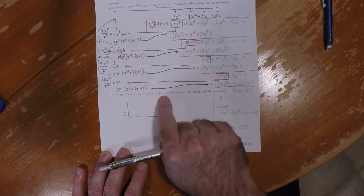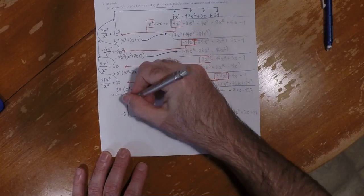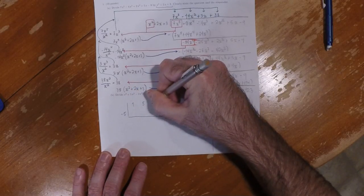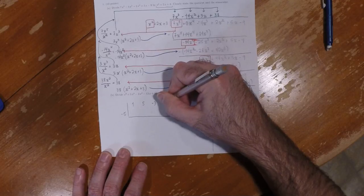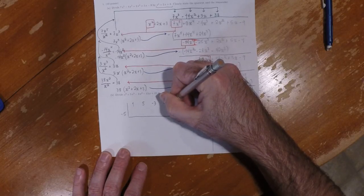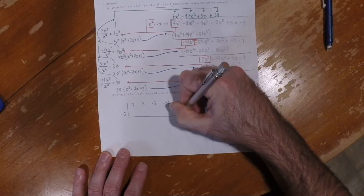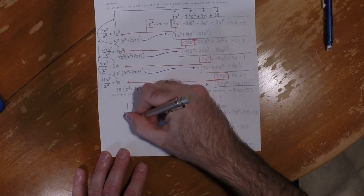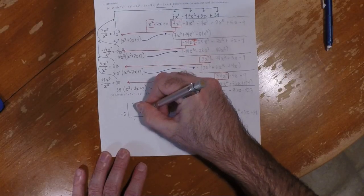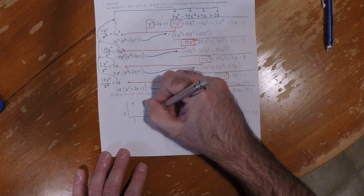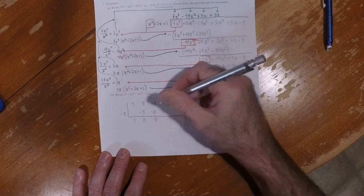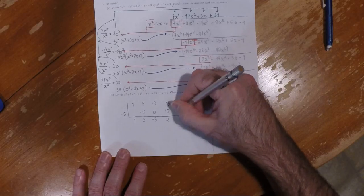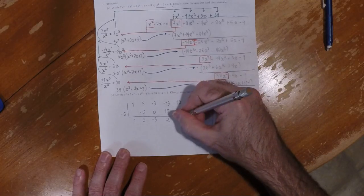So negative five right there. And then the coefficients: 1, 5, negative 3, negative 13, and 10. Carrying out the synthetic division steps: 1, negative 5, 0, 0, negative 3, 15, 2, negative 10, negative 10, 0.